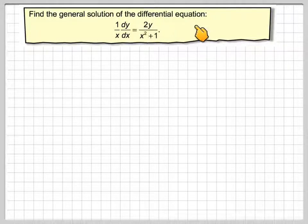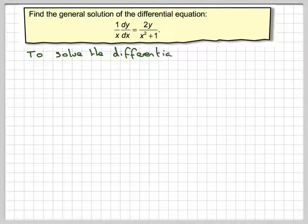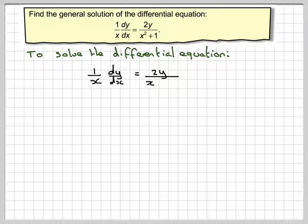Find the general solution to the differential equation: 1 over x times dy by dx is equal to 2y divided by x squared plus 1. We need to solve this differential equation where we've got 1 over x dy by dx equals 2y over x squared plus 1.